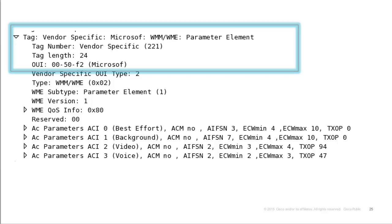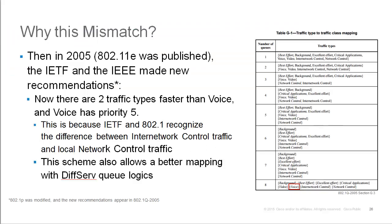By 2004, as 802.11e was going through ratification using that table — voice at 6, video at 5, network control at 7 — the IETF and the IEEE 802.1 group, which covers wired Ethernet, made new recommendations. They created more traffic type categories than the original seven, deciding there could be more traffic types than previously described.